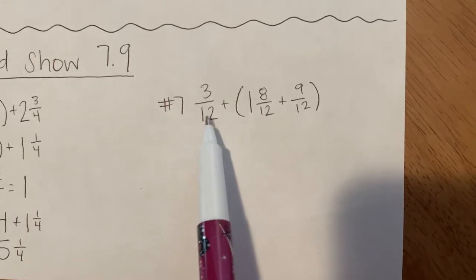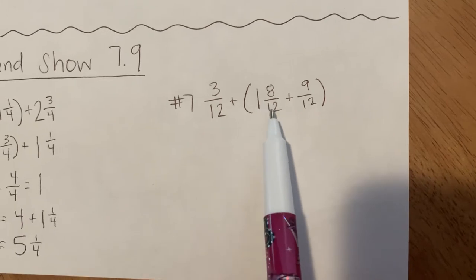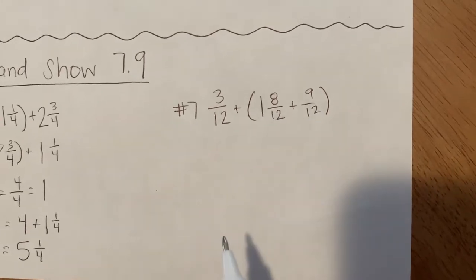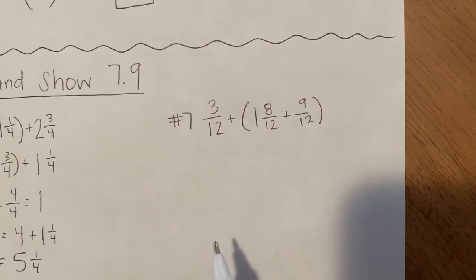Number 7 says 3 twelfths plus 1 and 8 twelfths plus 9 twelfths.